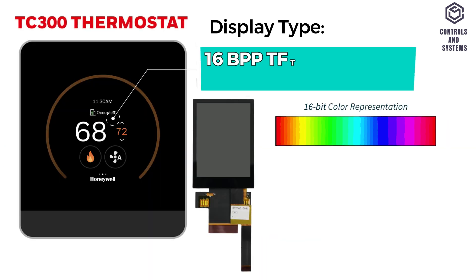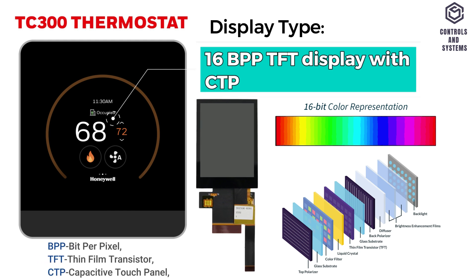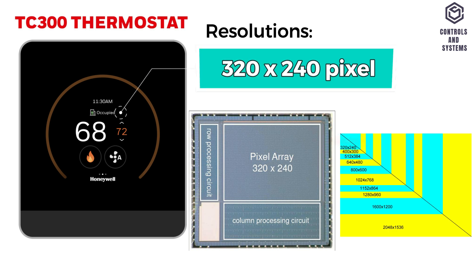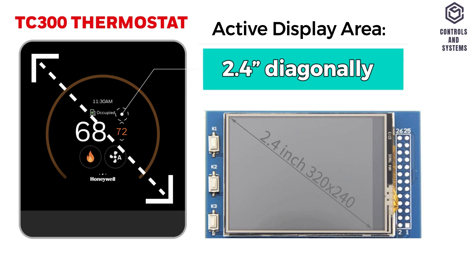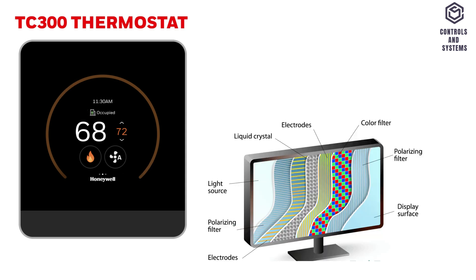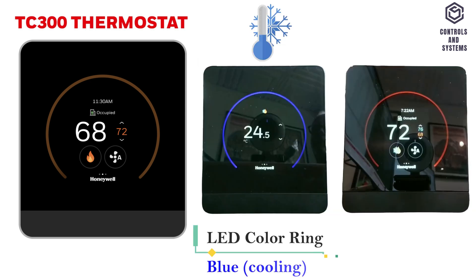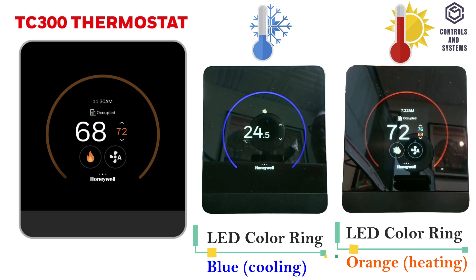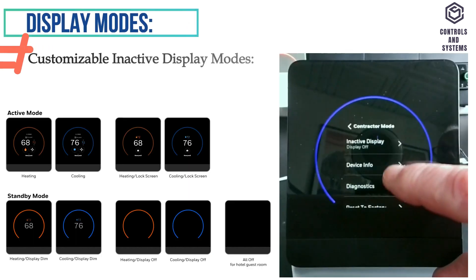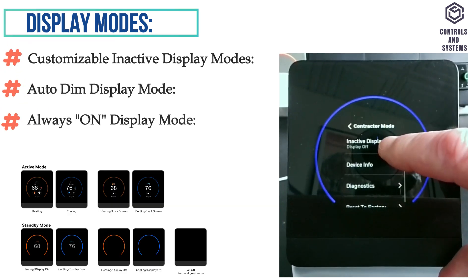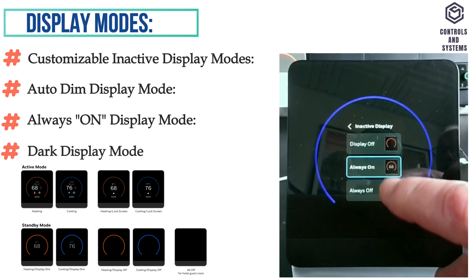Display Data. Display type is 16-bit per pixel thin film transistor display with capacitive touch panel. Resolution is 320 by 240 pixels. Active display area is 2.4 inches diagonally. Backlight is LCD, dimmable. LED color ring blue means cooling; LED color ring orange means heating. Display modes are customizable. Available modes include auto dimmable, always on display mode, and dark display mode.